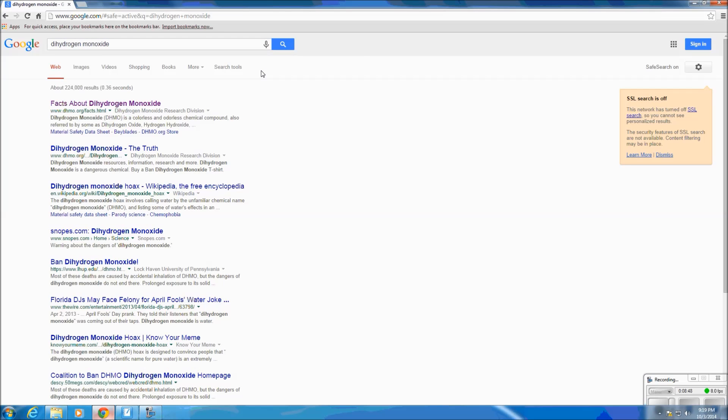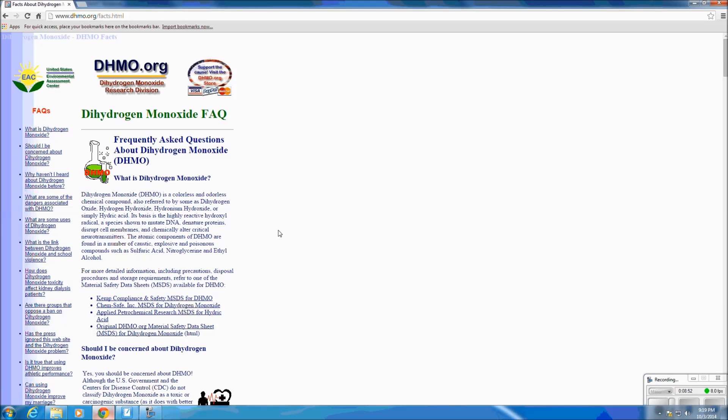Okay. Facts about dihydrogen monoxide. Let's click on that. Frequently asked questions. It says, dihydrogen monoxide is a colorless and odorless chemical compound also referred to by some as dihydrogen oxide. Its basis is highly reactive, hydroxyl radical species shown to mutate DNA.